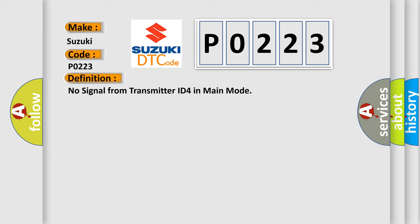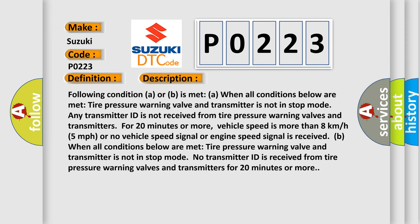Here is a short description of this DTC code. Condition A is met when: tire pressure warning valve and transmitter is not in stop mode, and any transmitter ID is not received from tire pressure warning valves and transmitters for 20 minutes or more. Vehicle speed is more than 8 kilometers per hour (5 miles per hour), or no vehicle speed signal or engine speed signal is received. Condition B is met when: tire pressure warning valve and transmitter is not in stop mode, and no transmitter ID is received for 20 minutes or more.